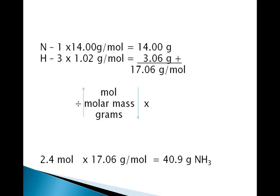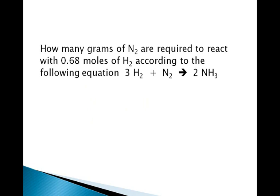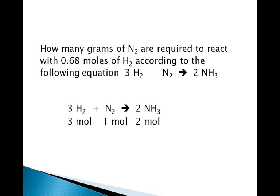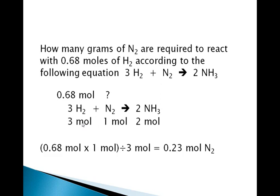Let's try another problem that is similar to the last. We will follow the same steps. How many grams of N2 are required to react with 0.68 moles of H2 according to the following equation? First, we rewrite the balanced chemical equation. Second, we write out the stoichiometric relationship. We are starting with 0.68 moles of H2 and trying to find out how much N2 in grams. We put 0.68 over the H2 and a question mark over N2. We multiply 0.68 times 1 and divide by 3, because this is a 3 to 1 relationship. 0.68 times 1 divided by 3 gives us 0.23 moles of N2.